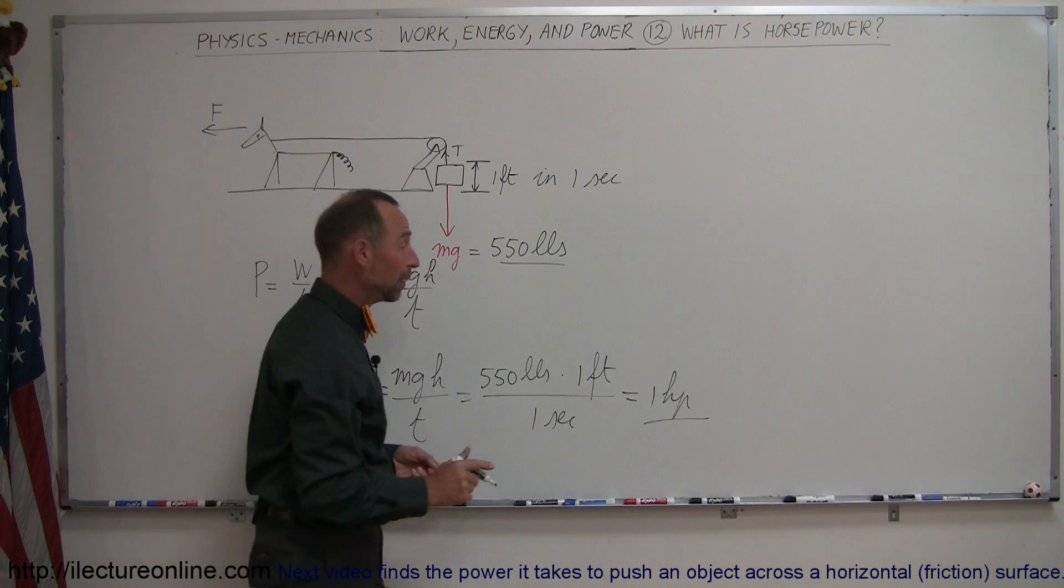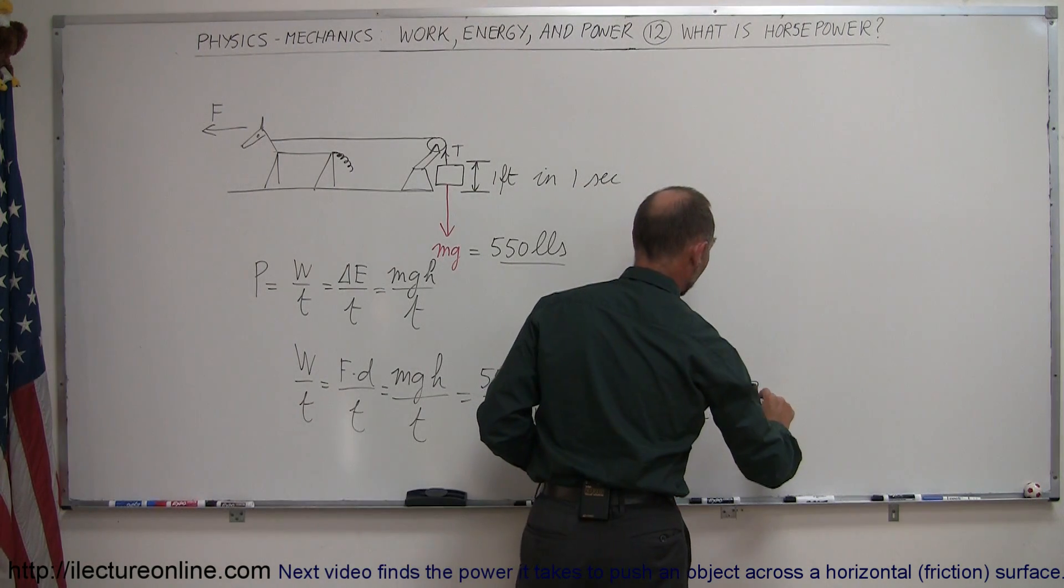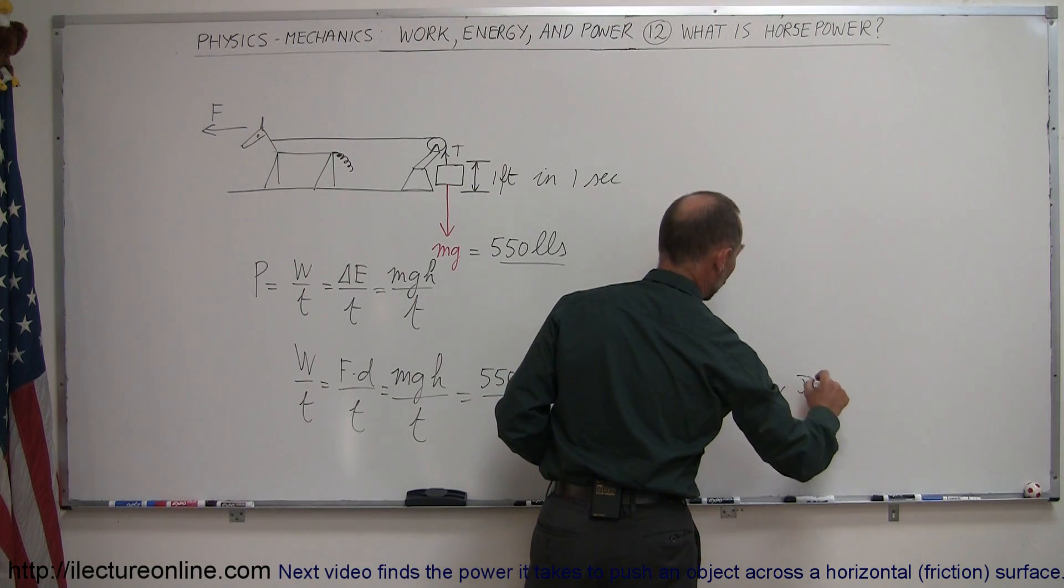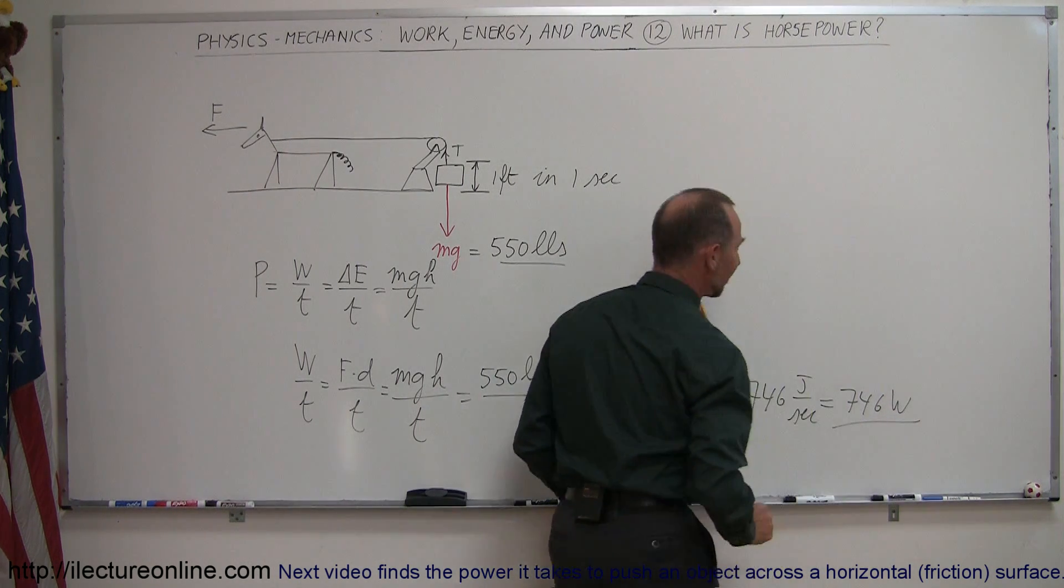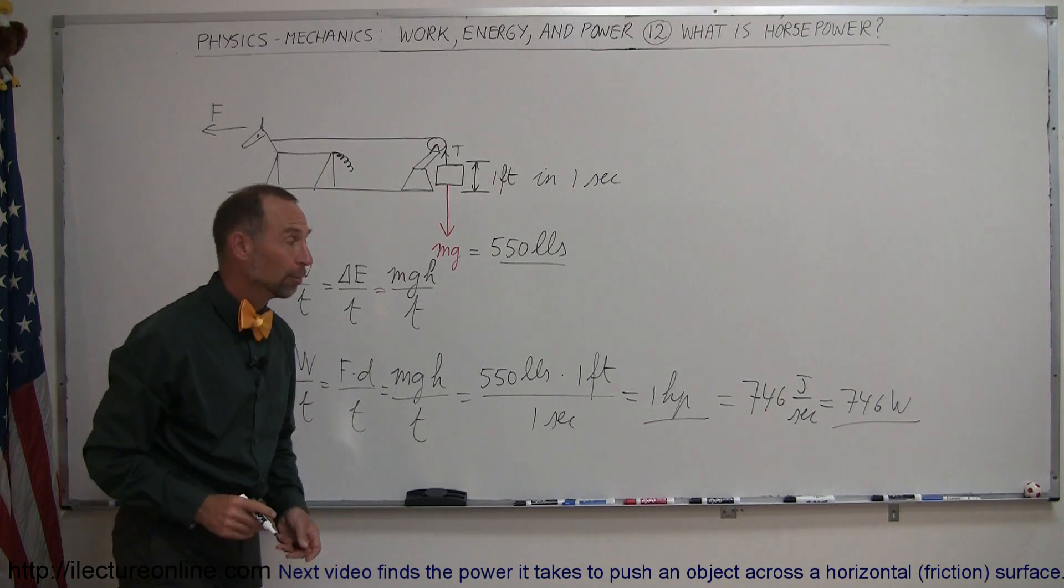It turns out that one horsepower in standard units is equal to 746 joules per second, which is equal to 746 watts. So that's the power that a horse can put out.